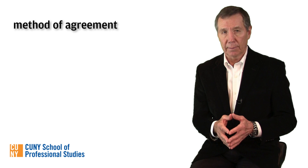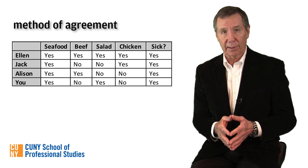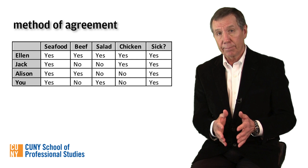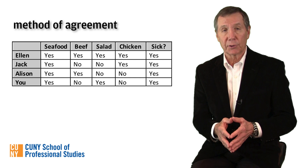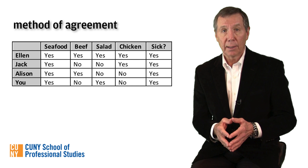Was there one dish that stands out as the culprit? This table shows what your group consumed. Ellen ate everything—seafood, beef, salad, and chicken—and she got sick. Jack ate both seafood and chicken, but passed on the beef and salad. He also got sick. Allison had seafood and beef, and declined salad and chicken. She got sick too. You ate the seafood and salad, but said no to the beef and chicken, yet you were no different—you too got sick.